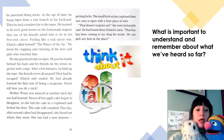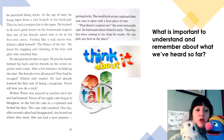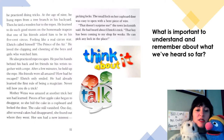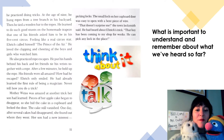When Enric wasn't working or going to school, he practiced doing tricks. At the age of nine, he hung ropes from a tree in his backyard and tied a wooden bar to make a homemade trapeze. He learned to do such good stunts that a friend asked him to be in his five-cent circus. Feeling like a real circus star, Enric called himself the Prince of the Air. He loved the clapping and cheering of the boys and girls who watched him. He also practiced rope escapes — he put his hands behind his back, let friends tie his wrists, and after a few minutes held up the rope free. His friends were amazed. Enric only smiled; he had already learned the first rule of being a magician: never tell how you do a trick.